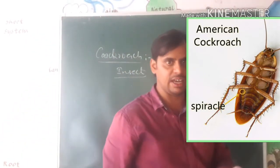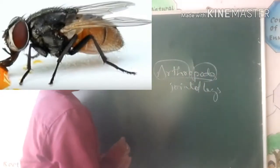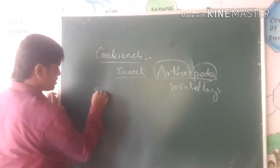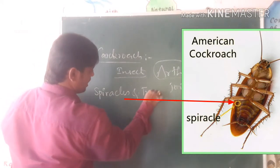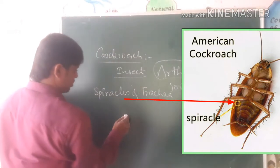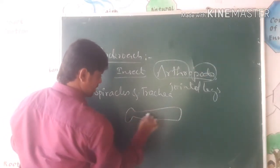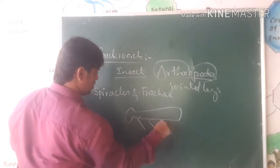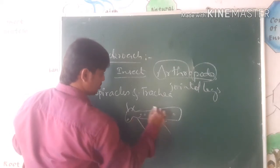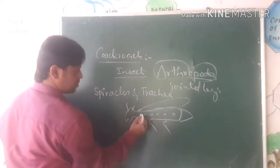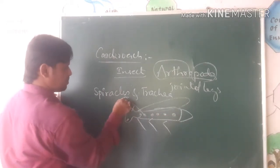Insects like cockroach, grasshopper, housefly, and butterfly — they respire through structures called spiracles and trachea. If it is a grasshopper, it can respire through the sides of its body because at the sides of their body they contain holes called spiracles.